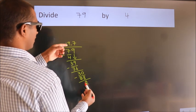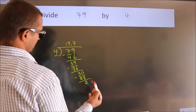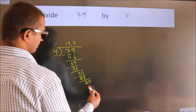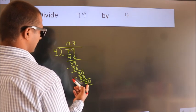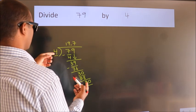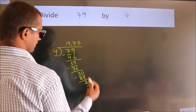After this, we already have the decimal, so we directly take 0. So we have 20. When do we get 20 in the 4 table? 4 fives is 20.